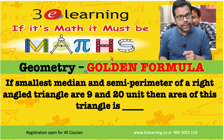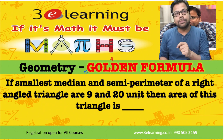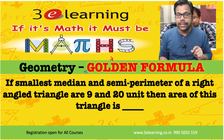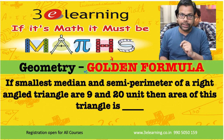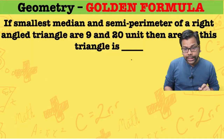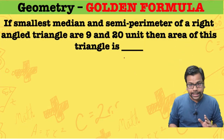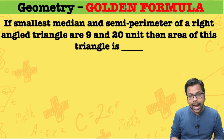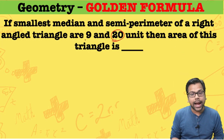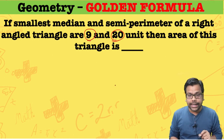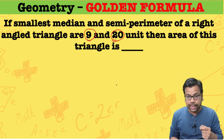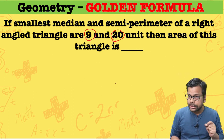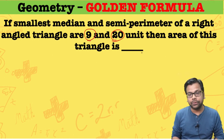First, we will see the formula and understand how the formula is derived. So, whenever we have a right-angled triangle with the semi-perimeter given and one of the sides given — which is the largest side — we can apply this directly.